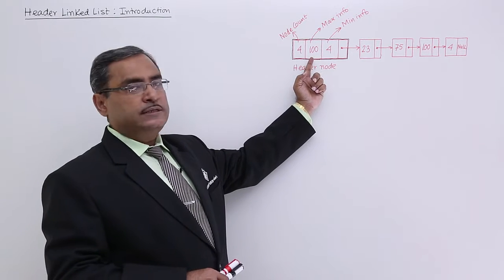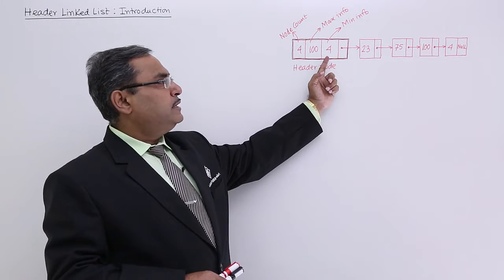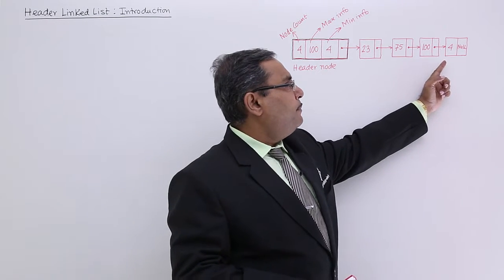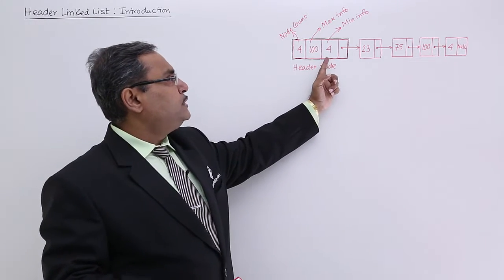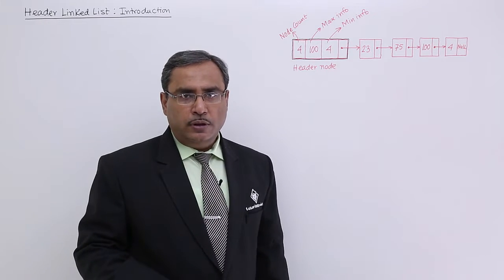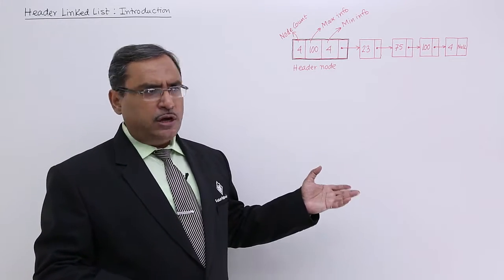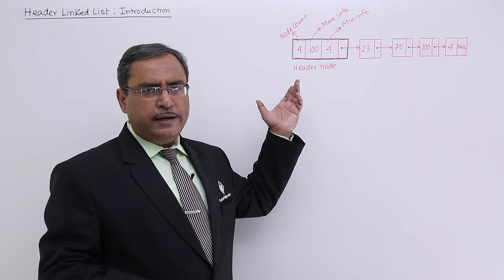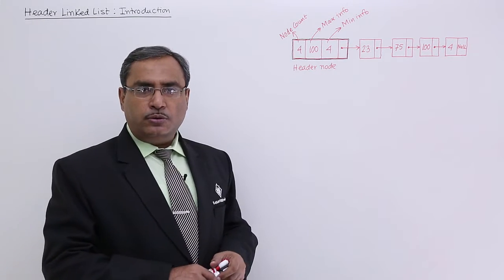So this max info field is 100. The third field is min info. What is the minimum value? 4. So this field has 4. I could have kept the average of all node info or any other data I required in the header node.